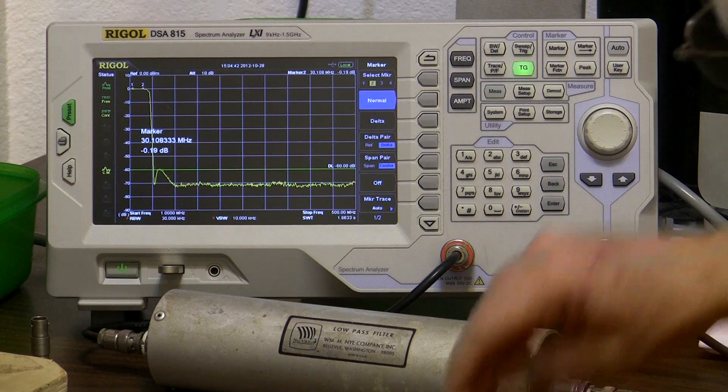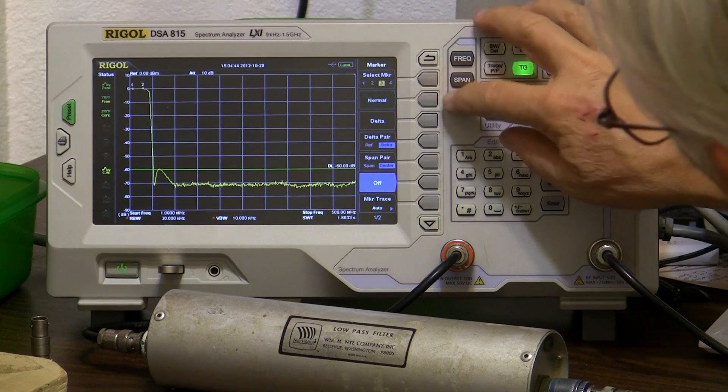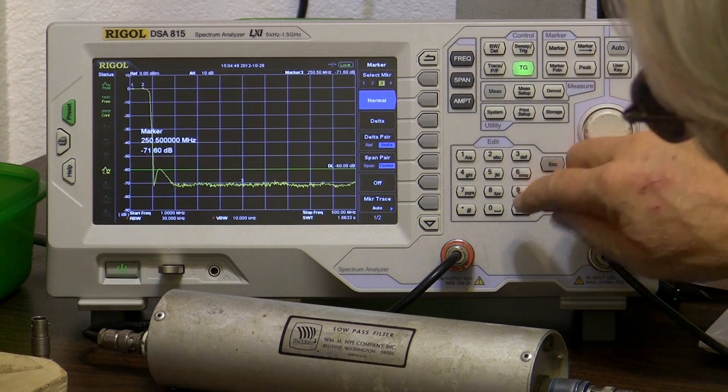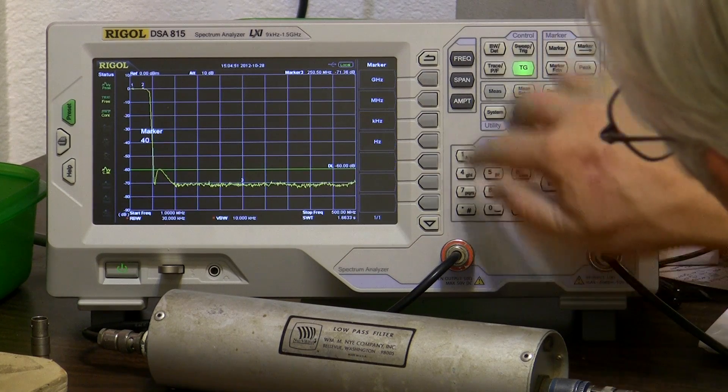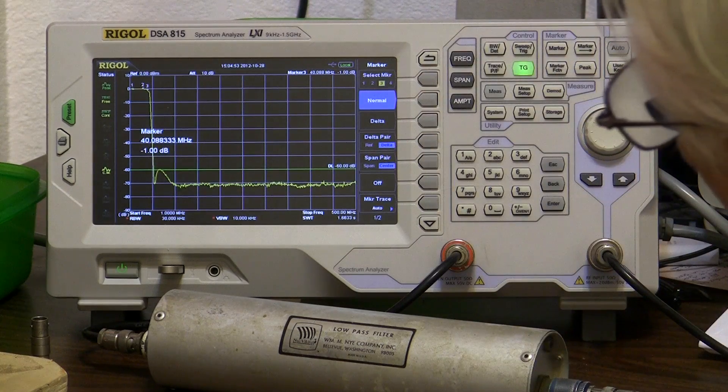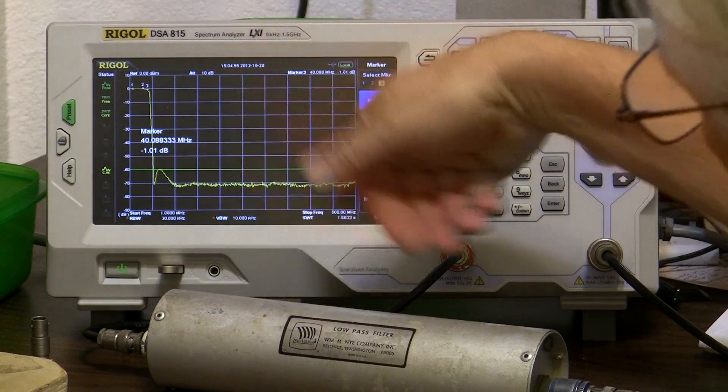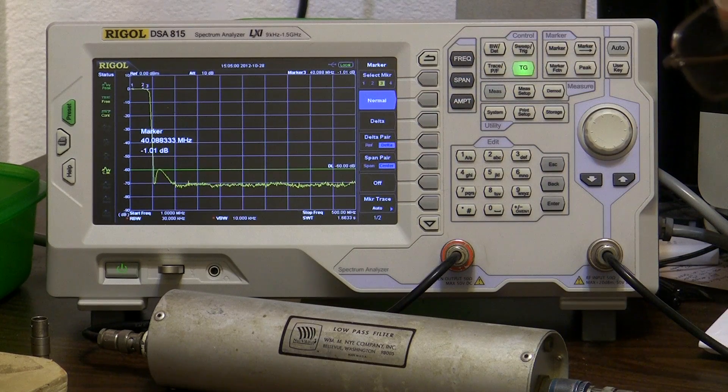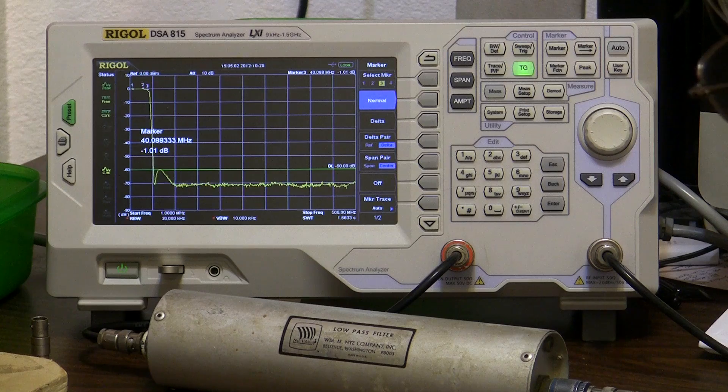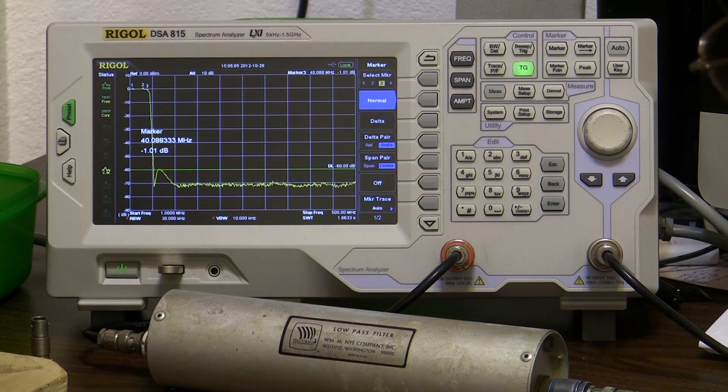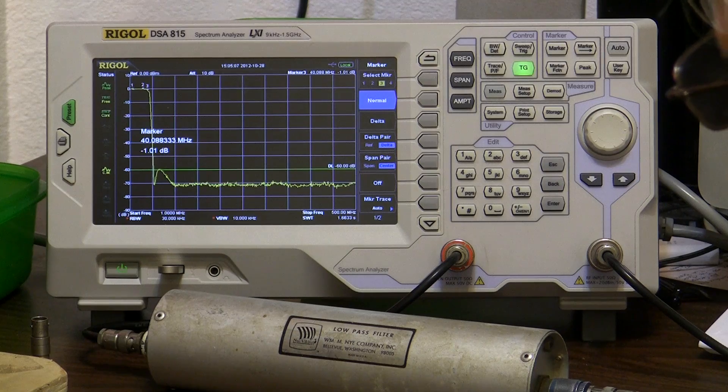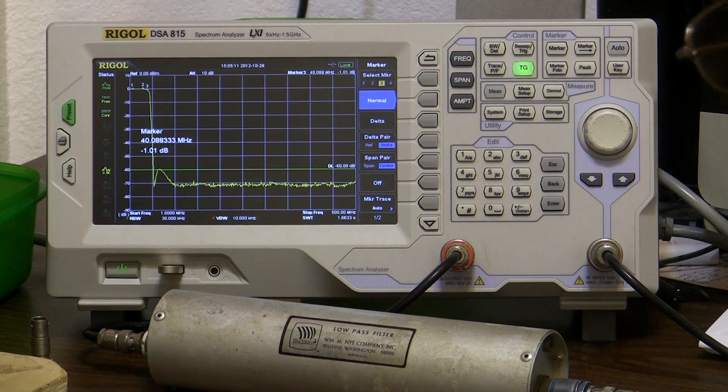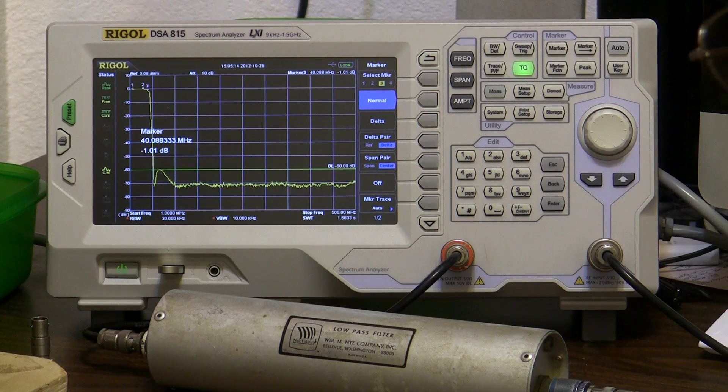Let's try 40 megahertz. So we'll go to number three here, turn it on, and marker, and then we'll go to 40 megahertz. 40 megahertz appears to be the 1 dB bandwidth of this particular filter. So it's got plenty of headroom for amateur radio for certain, and may even have enough headroom to do part of the utility band and public service band that's at 30 to 50 megahertz.